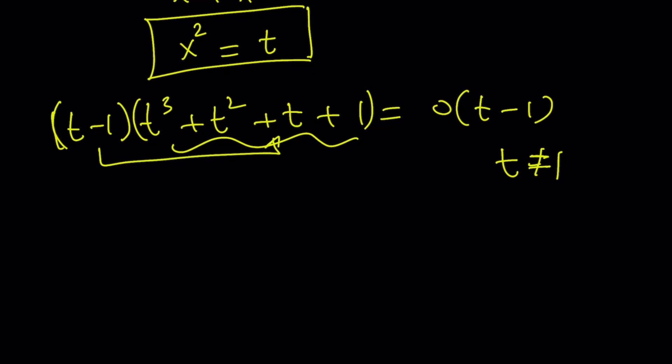So from here, we get the following. If you multiply these two guys, hopefully you should know this. This gives you t^4 - 1 = 0. From here, we can factor t^2 - 1, t^2 + 1, and then equals 0. And you get the same idea.